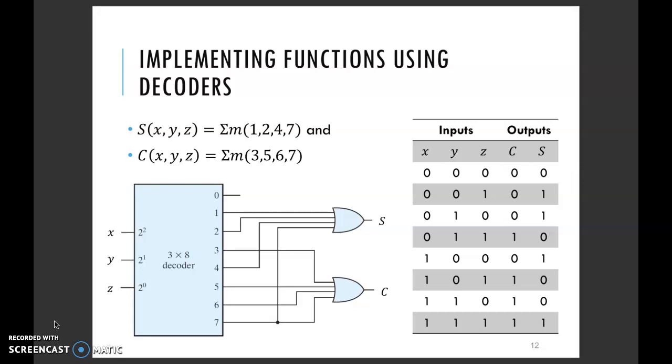Then you're going to do the same for the carry. The carry Boolean expression is given by the summation of minterms 3, 5, 6, and 7. Having these taken as outputs from the decoder and fed into the inputs of an OR gate, you have the carry output of the full adder.